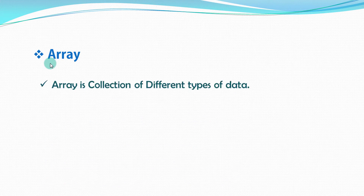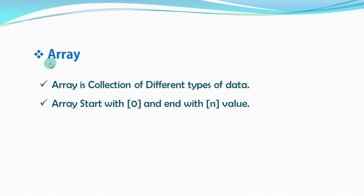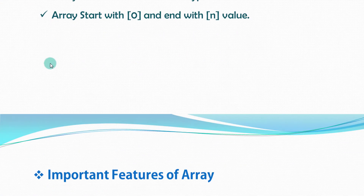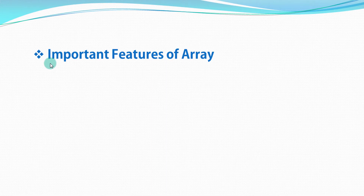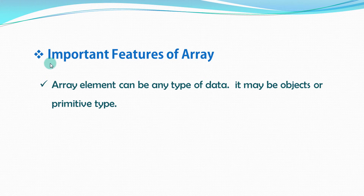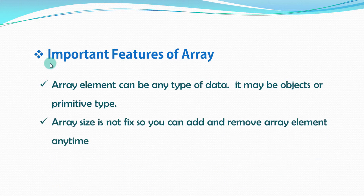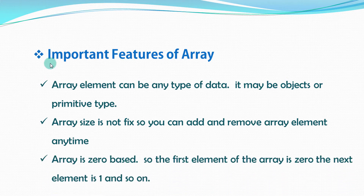Now let's move to the next topic: arrays. An array is just a collection of data — a collection of different types, whether primitive or object type. Array is sequential data that starts at index zero and ends at n. Array elements can be any type of data. Array size is not fixed, so you can add and remove elements anytime. Array is zero-based.